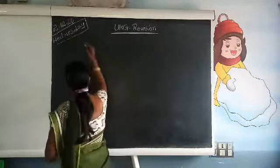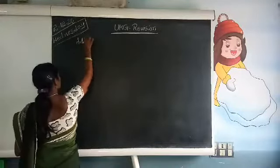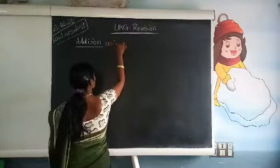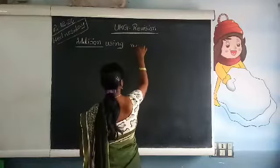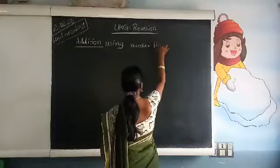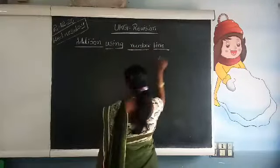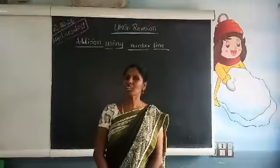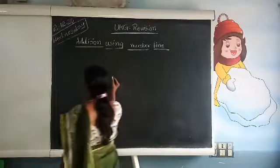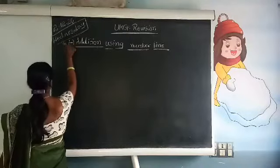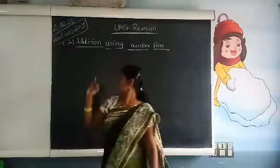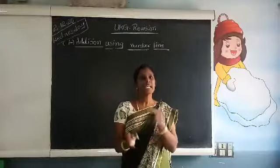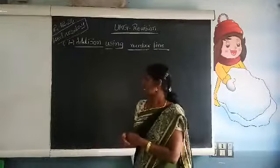Go to the region Maths — addition using number line. What is meant by addition? Addition means putting together. What is the symbol of addition? Plus — a small sleeping line and a small standing line. The symbol of addition is plus. When we see the symbol we should add those numbers. We have learnt addition with objects, using lines, using fingers. Today we practice addition using number line.